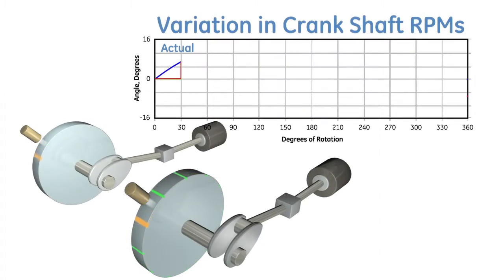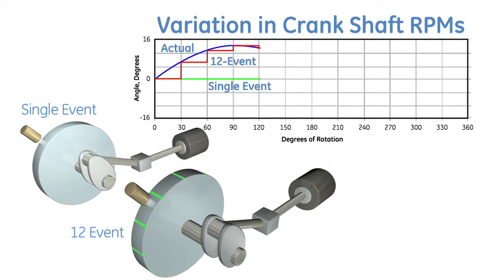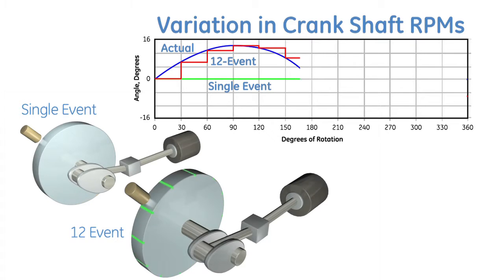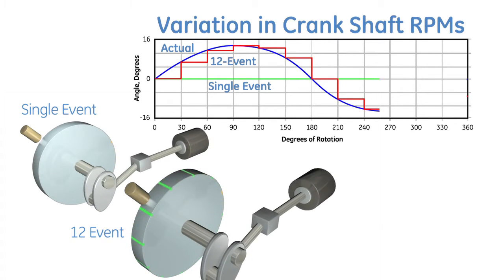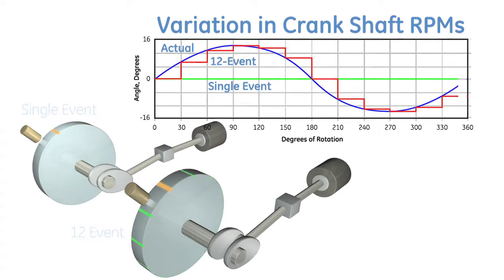In reality, they should be comparing our multi-event wheel with their single event. The 12 events allows us to better determine changes in angular velocity of the crankshaft and therefore more accurately characterize compressor conditions throughout the entire cycle.